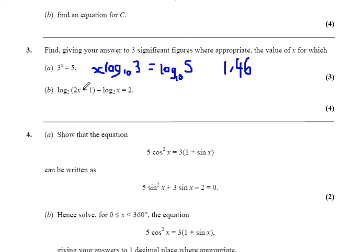Secondly, log to base two of this minus log to base two of that equals 2. The first thing to do is to combine these into one logarithm. Then we can unlog both sides. Combine them into one logarithm. Well, log a minus log b is log a divided by b. So we end up with log to base 2 of 2x plus 1 over x equals 2.